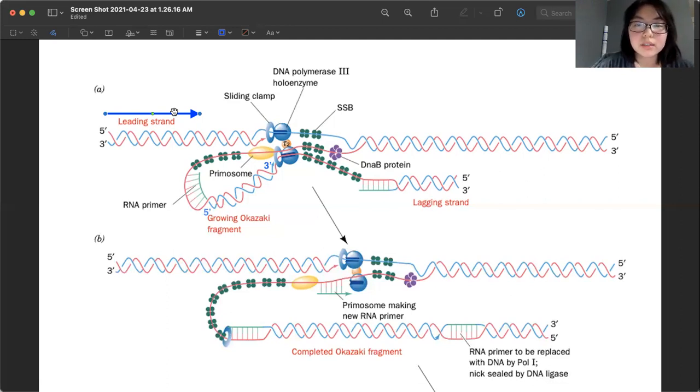Yeah, so leading strand is pretty straightforward. So everything is going this way, essentially. But then the complicated part about the trombone model is that in E. coli, we want the two DNA polymerases to be replicating the two strands in coordination with each other.